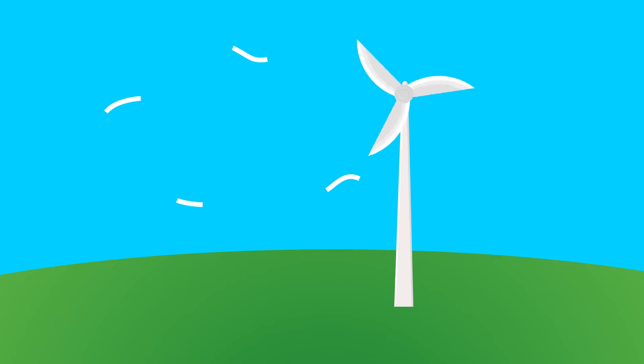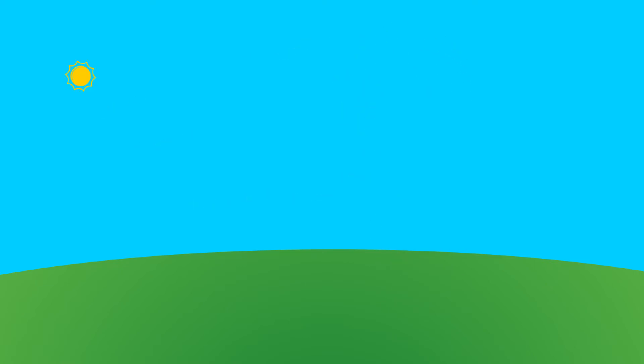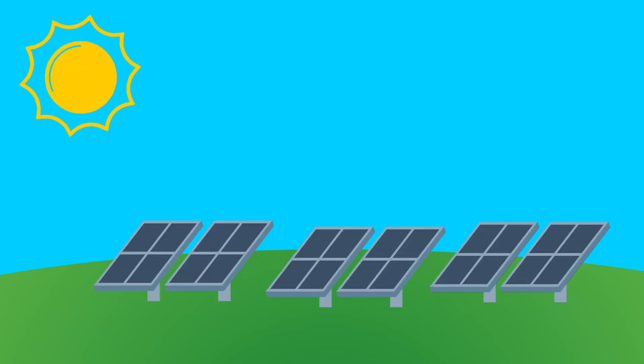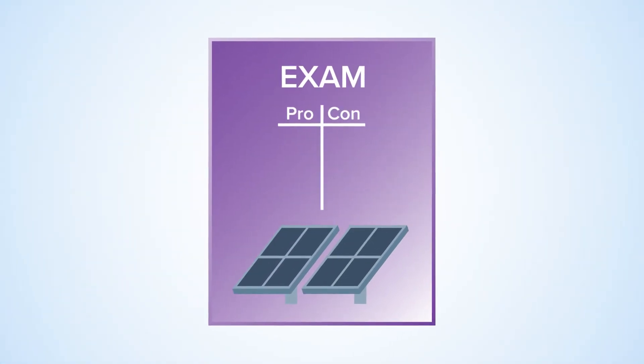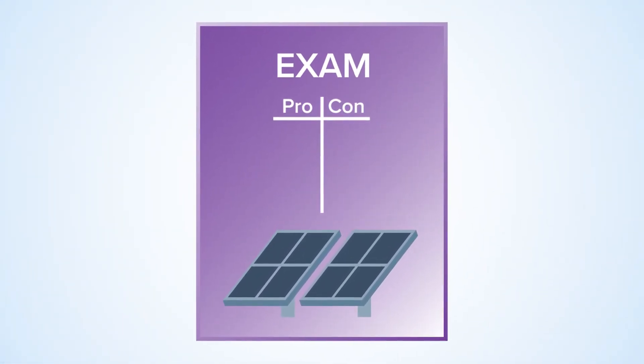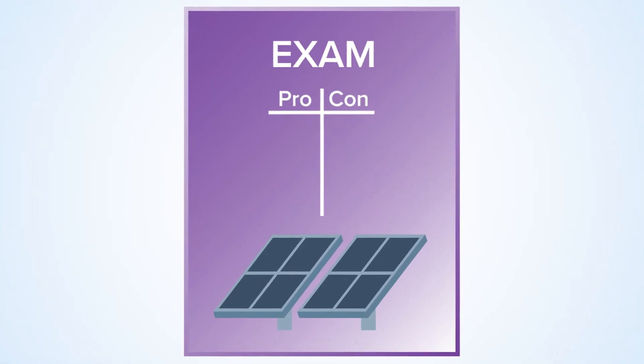The seventh practice is perhaps the most important one, because it's environmental solutions. All throughout the course, you'll learn about environmental issues and potential solutions that you can do to work towards a more sustainable world. On the exam, you'll be asked about those potential solutions and about their advantages and disadvantages.